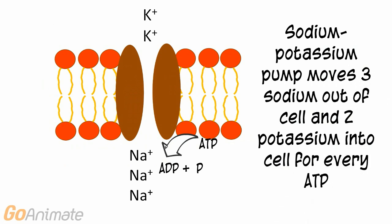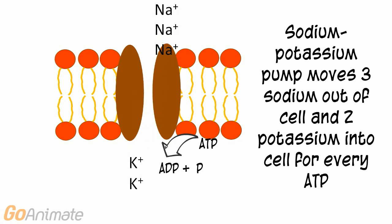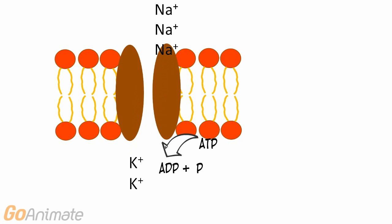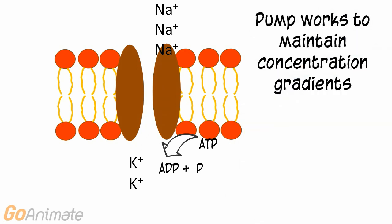An example of an active transport protein is the sodium-potassium pump. The sodium-potassium pump moves three sodium outside of the cell and two potassium inside of the cell for every molecule of ATP used. The sodium-potassium pump works to maintain concentration gradients.